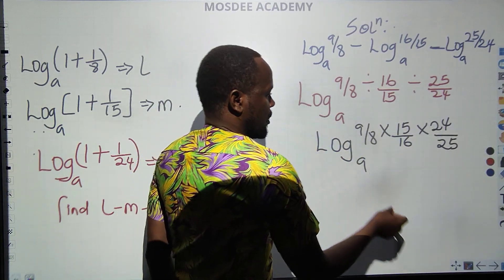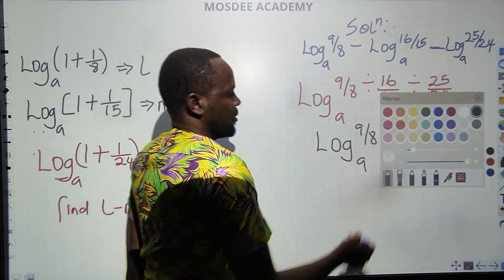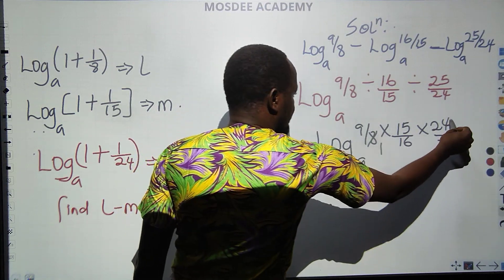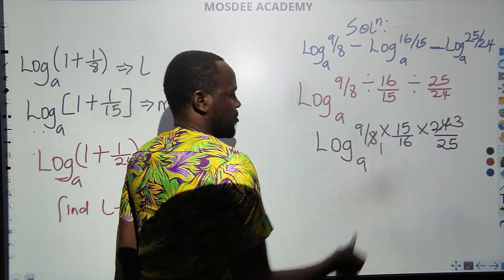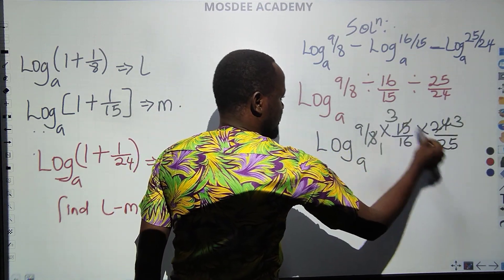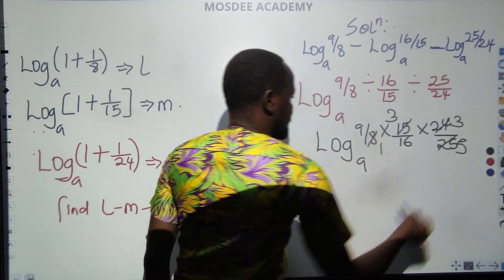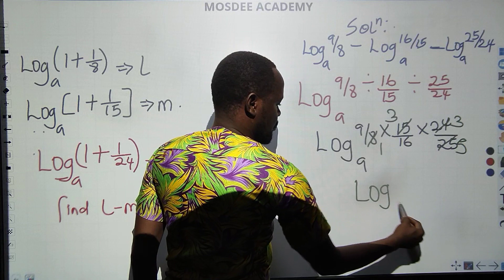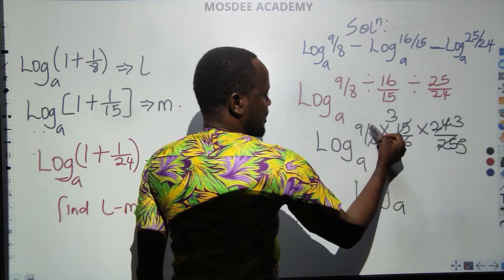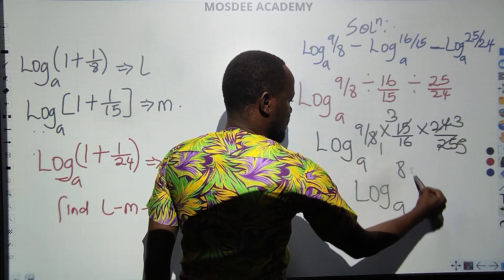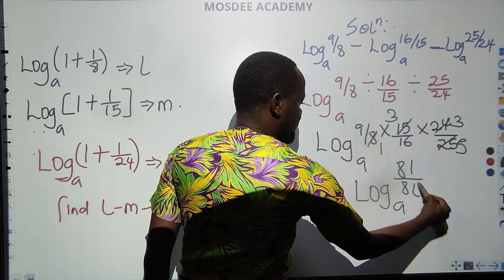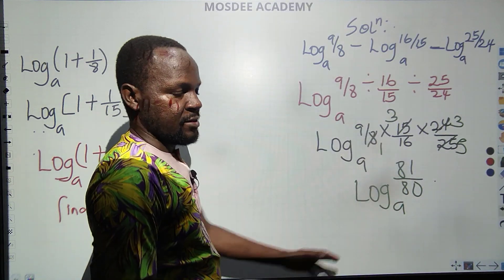Everybody knows what can cancel, because it's simple. So then we can cancel. 8, 3s are 24, 3s are 15, 5s are 25. So directly I can say the answer I'm having is log to base A, 9 times 9 is 81, over 16 times 5 is 80. That is the answer to the question, but look at the format in which the examiner puts the options.